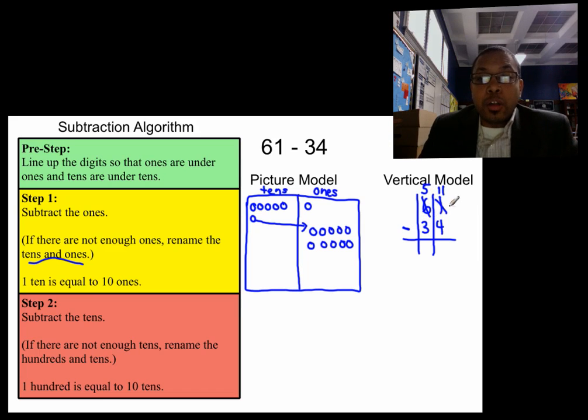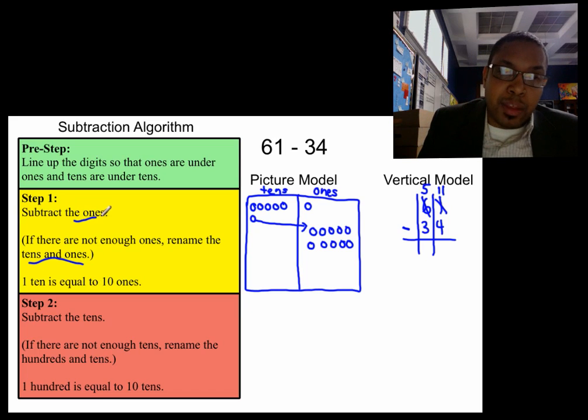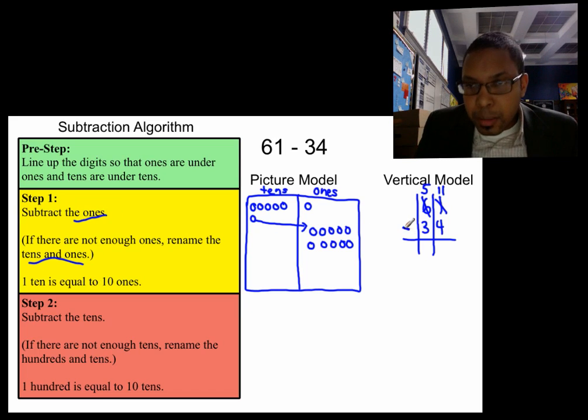And that is called renaming. So six tens, one one has another name: five tens and eleven ones. Now that we've done our renaming, now we can subtract the ones. We're trying to subtract four ones. Do we have enough? Yes, we do, because the whole is four or more ones.